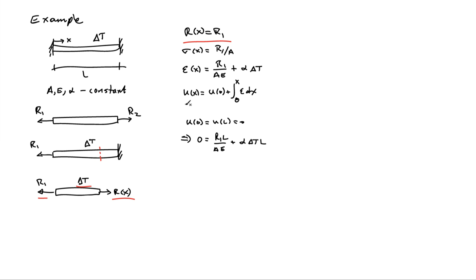So if I use those two facts and use this expression here for the displacement field, I'll find that zero equals R1 L over AE plus alpha delta T L. So all I've done there is I've used this expression for the strain inside that integral, and then set X equal to L in that expression.